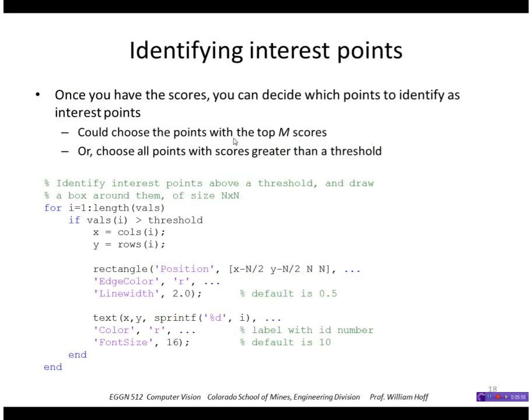So once I have those scores, I can do two things. I could just choose the top M scores or I could choose points with scores greater than a threshold.